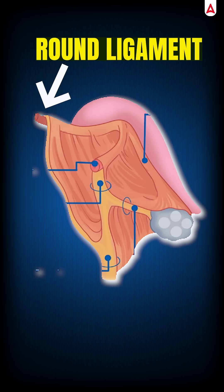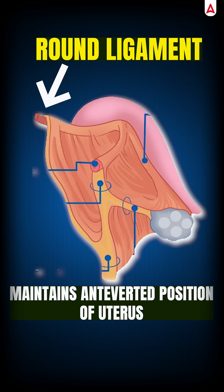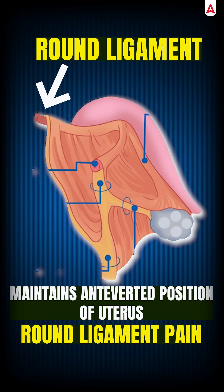Round Ligament is second. It maintains the anteverted position of the uterus. Round ligament pain is the most common pain in pregnancy.